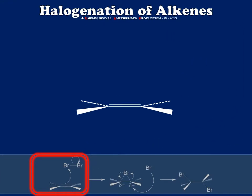Hey everybody, it's Professor Davis here from ChemSurvival.com and the YouTube channel ChemSurvival. Today I'm going to talk with you for just a couple of minutes about halogenation of alkenes. I picked a very simple alkene for my demonstration here — 2,3-dimethyl-2-butene. I've chosen a very symmetrical, very simple alkene so that we can focus on the details of the mechanism. In another video we'll take a look at what happens when we have more complex alkenes.